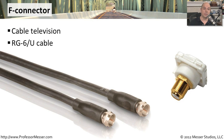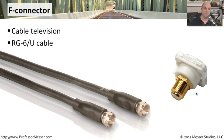A type of connection we've had for a very long time, but only recently started using for digital signals, is the F connector. This is the type of connector you might have on a cable television system. We used to run analog cable television into our homes and offices on coax connections with these F connectors. Now we're using those same connections to run digital television signals, internet connectivity, and voice communication — all digital — over the same cables coming into our home, with the F connector enabling that connectivity.